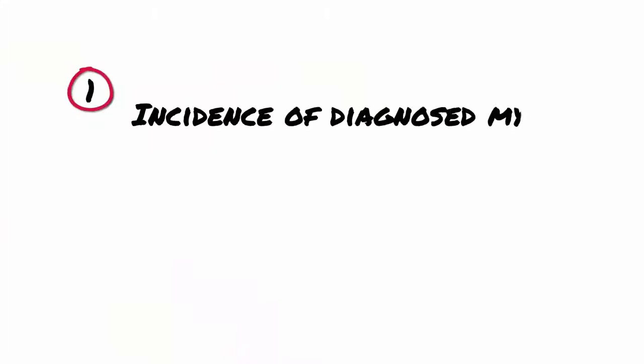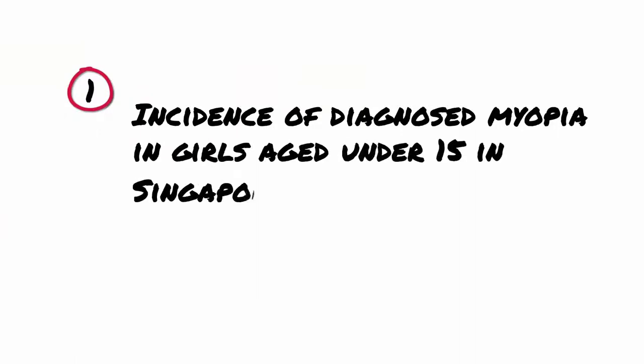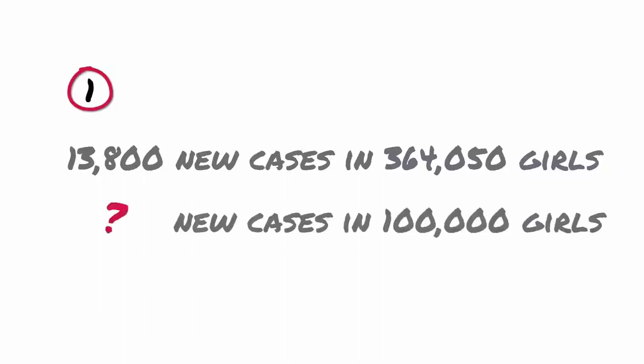Let's look at our first example. How do we calculate the incidence in 2014 in Singapore of diagnosed myopia in girls aged under 15? We know that between January and December 2014 there were 13,800 new cases in 364,050 girls. In this case, we want to state the incidence per 100,000 girls.